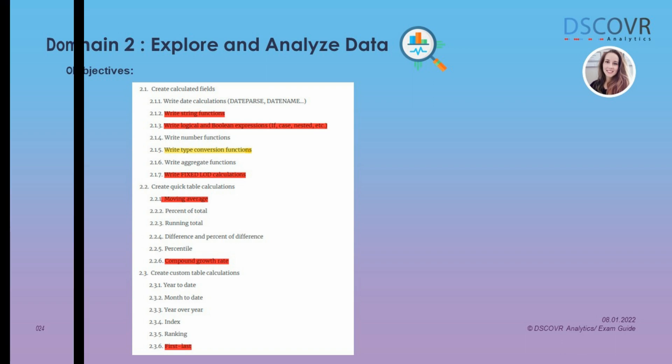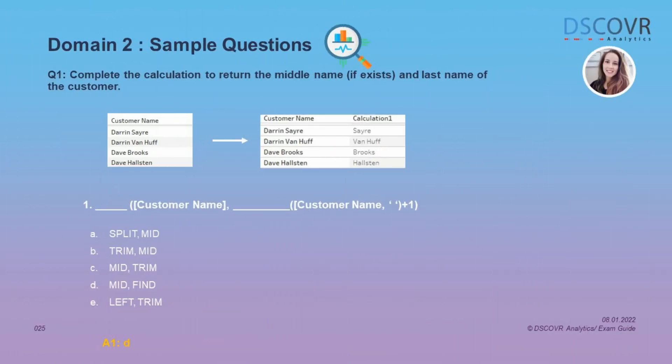Let's take a look at some questions. This question asks us to complete the calculation to return the middle name of the customer if it exists, as well as the last name. We're given a customer name table where some customers have a middle name. If you used a regular split function, you'd lose the middle name and only get the last name. To achieve what the question asks, we need two different string functions. The answer is D — we're going to use the MID and the FIND functions.